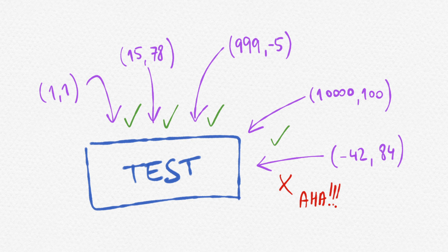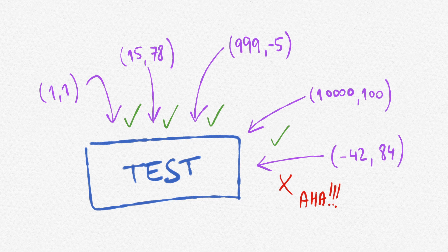And whenever a value is found to fail the test, the property based testing libraries usually have some kind of shrinking mechanism to find a smaller value, or a simpler value, really as simple as possible, that still fails the test.